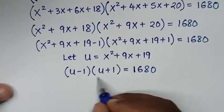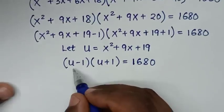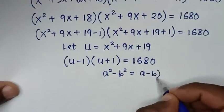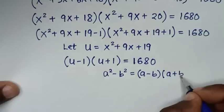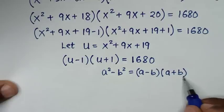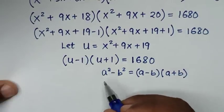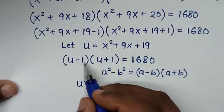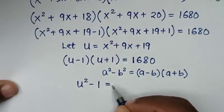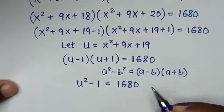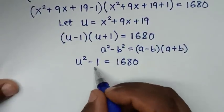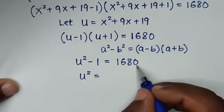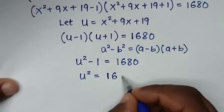This expression is in the form of a difference of squares: a² − b² = (a − b)(a + b). Applying this rule, (u − 1)(u + 1) becomes u² − 1² = u² − 1 = 1680. Taking the −1 to the right side gives u² = 1681.